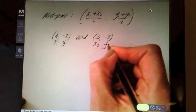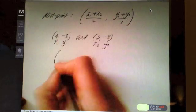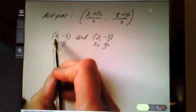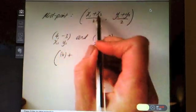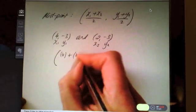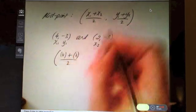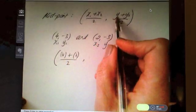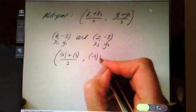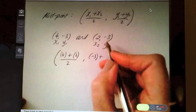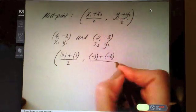Now let's fill in the formula. Bracket: x1 which is 4, plus x2 which is 2, divide by 2. Comma, y1 which in this case is -3, plus y2 which is also -3, divide by 2.